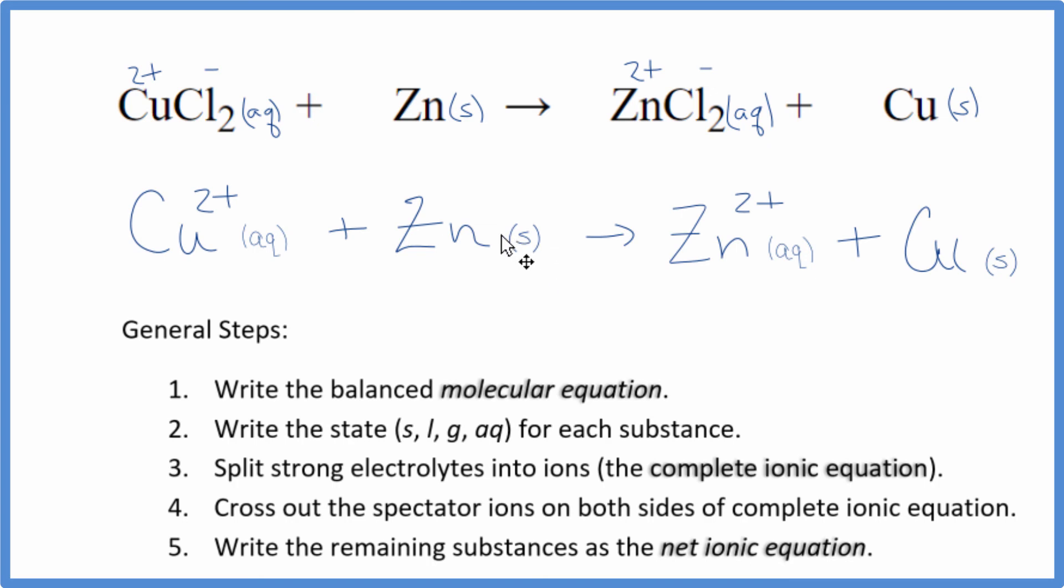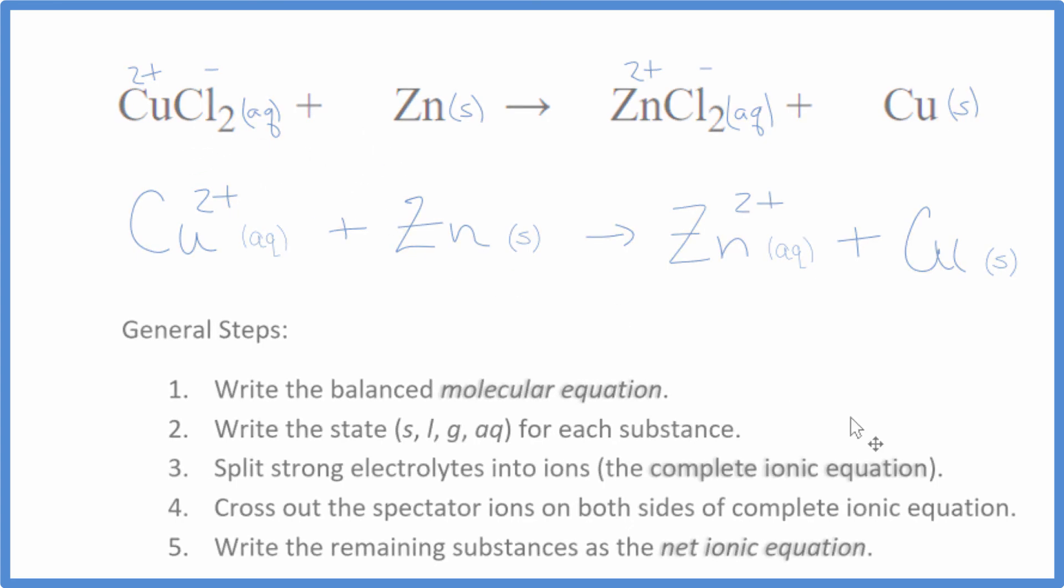We have our charge conserved. We have a two plus here. So this side is two plus. Over here, we have two plus. Charge is conserved. If you count the atoms up, they're balanced as well. This is Dr. B with the balanced net ionic equation for CuCl2 plus Zn. Thanks for watching.